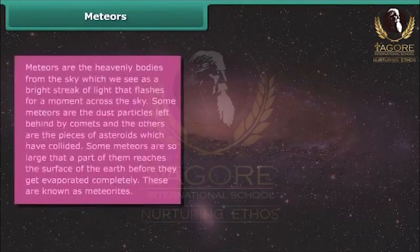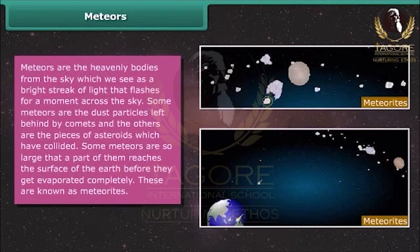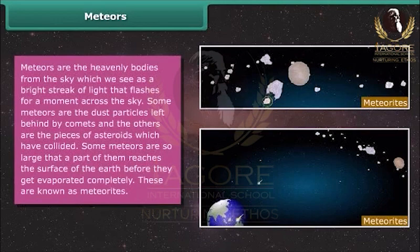Meteors are heavenly bodies from the sky which we see as a bright streak of light that flashes for a moment across the sky. Some meteors are the dust particles left behind by comets, and others are pieces of asteroids which have collided. Some meteors are so large that a part of them reaches the surface of the Earth before they get completely evaporated. These are known as meteoroids.